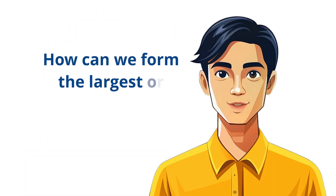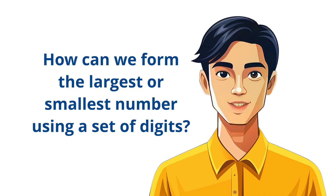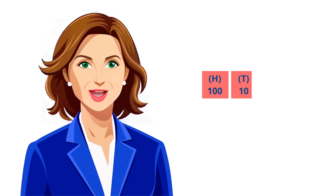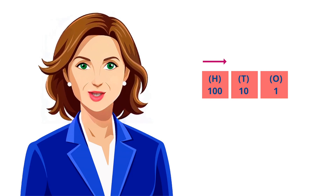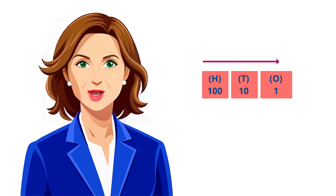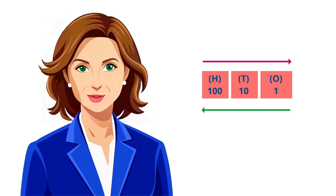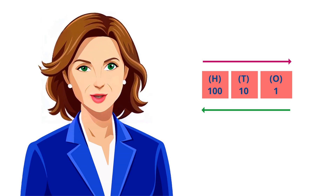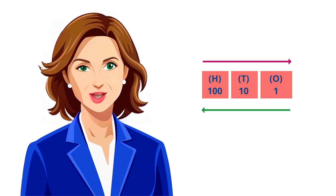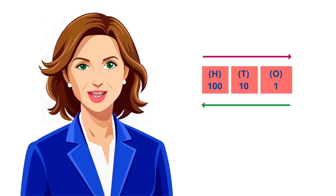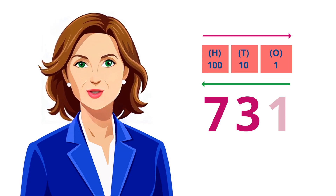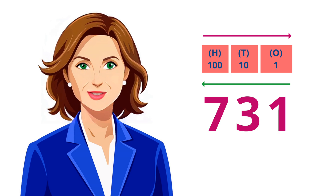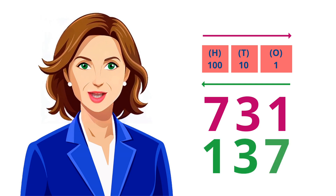How can we form the largest or smallest number using a set of digits? Good question. To form the largest number, arrange the digits in descending order, and for the smallest number, arrange them in ascending order. For example, with the digits 3, 7, and 1, the largest number we can form is 731, and the smallest is 137.